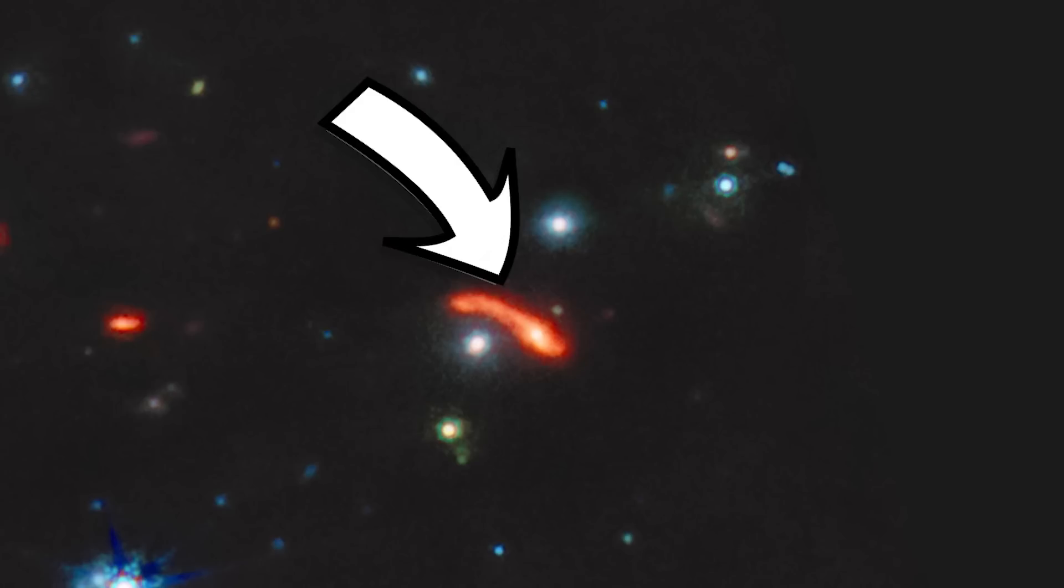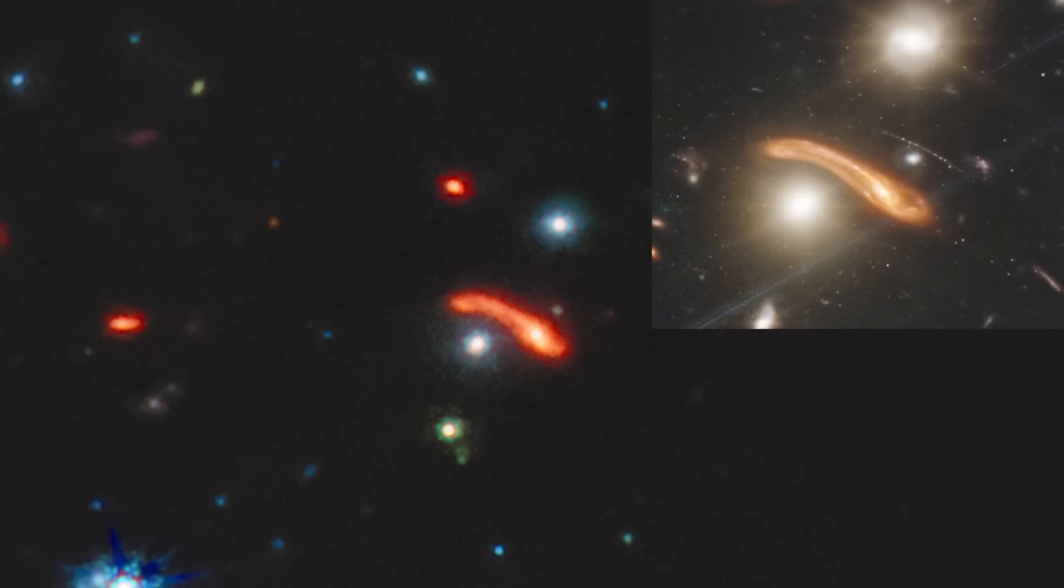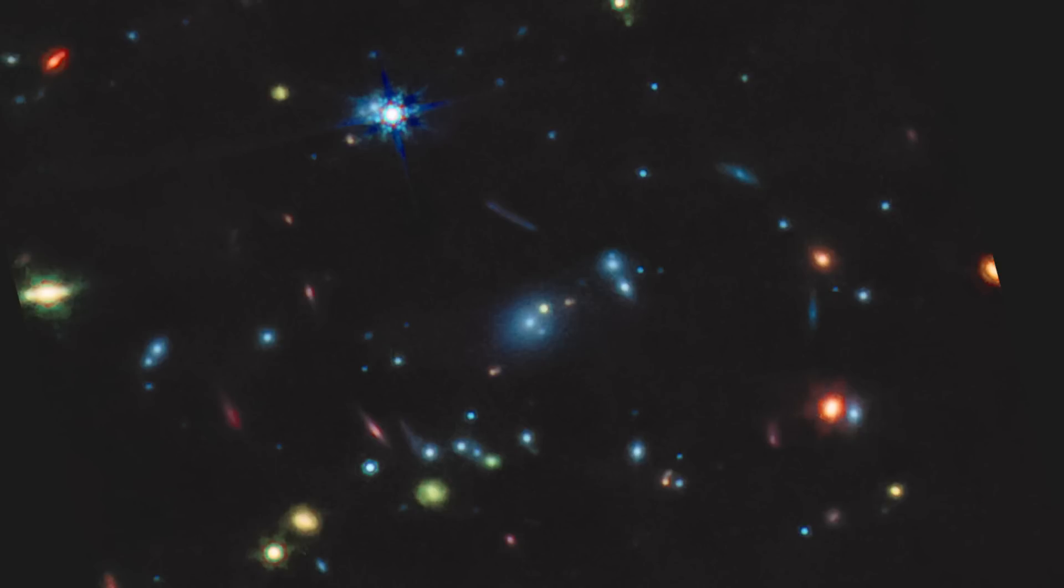For example, this blobby galaxy here, which I think we've all collectively decided to call the Dali galaxy, has way more structure and detail in the NERCAM image. The stars too have much smaller spikes here, telling us that we received less light in this wavelength, and they look more like blue snowflakes rather than huge spiky beasts.